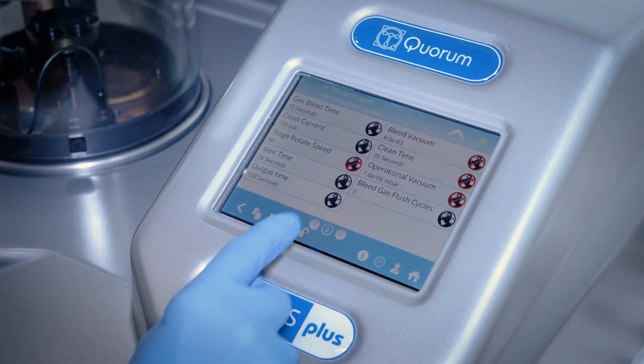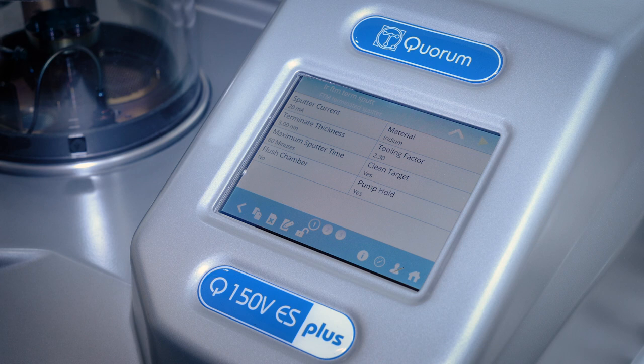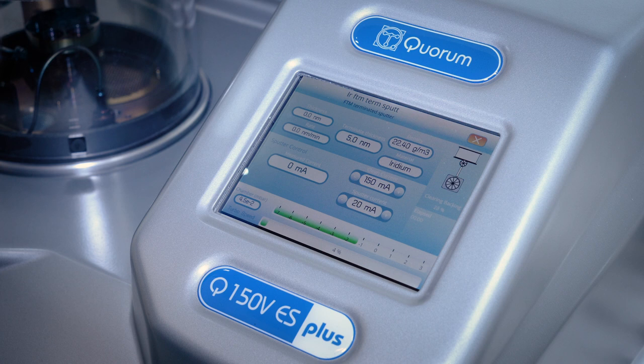After editing these key parameters, the machine is ready to run. By pressing the green arrow, we activate the recipe and the coating process starts.